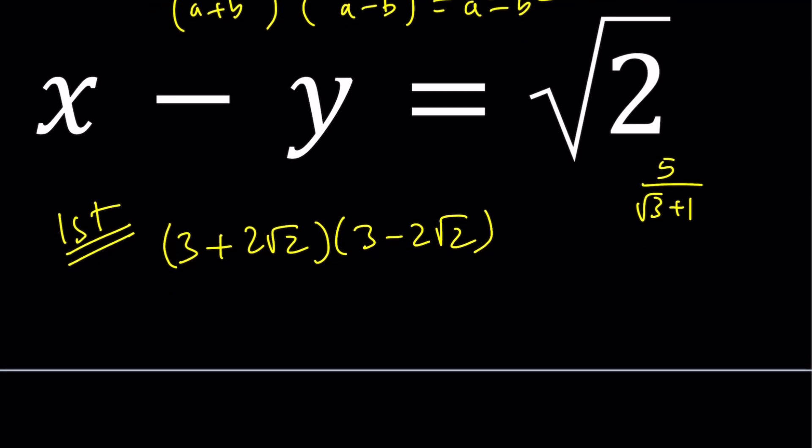So when you multiply these two things from difference of two squares, you're going to get 9-8, which equals 1. That's awesome.